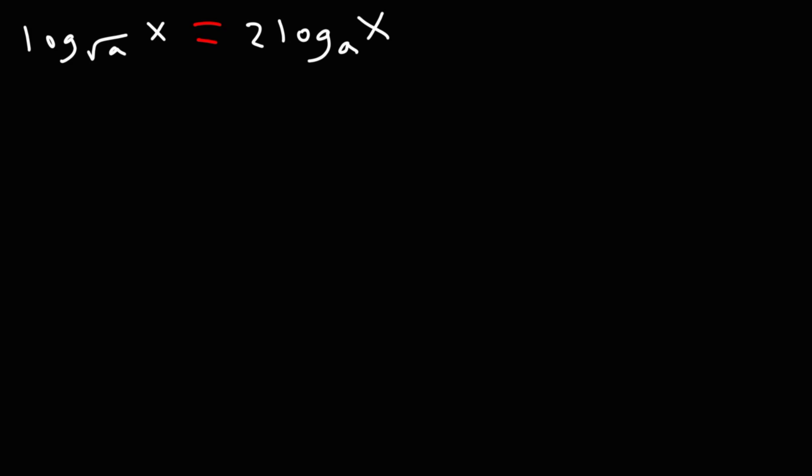Consider the logarithmic equation shown on the screen. How can we prove if this equation is true or not? In order to prove this logarithmic equation, we need to make either the left side equal to the right side or the right side equal to the left side — either way, we need to make sure that both sides are exactly the same. So in this example, I'm going to start working from the left side and change it to the right side. If I'm able to do that, then this mathematical statement has been proven true.